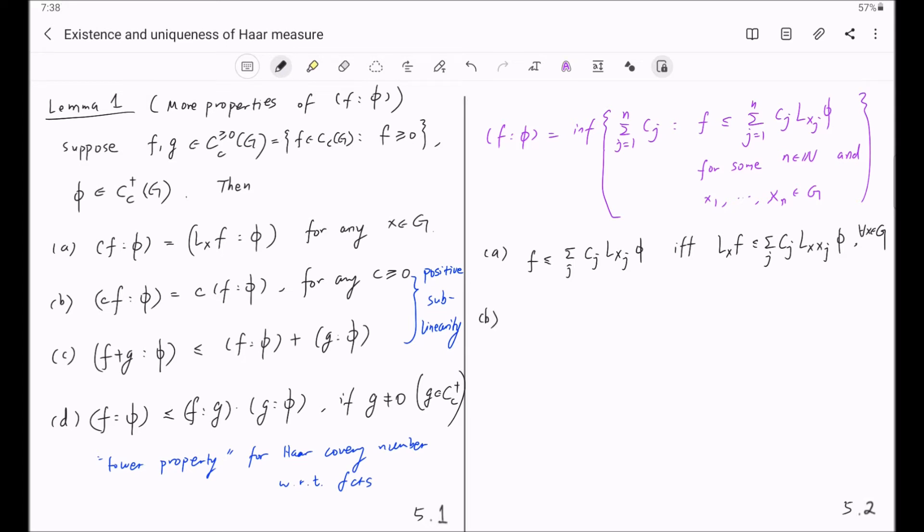Now part B is also easy. F less or equal to this linear combination, if and only if C times F is less or equal to this obvious linear combination.